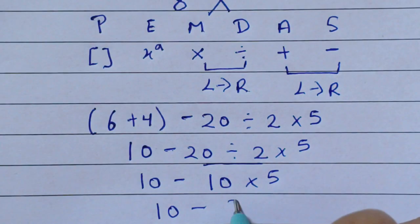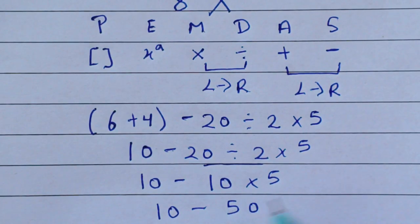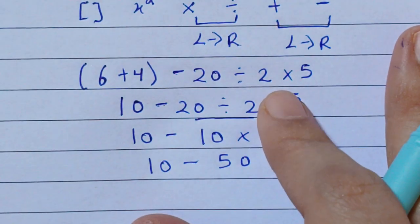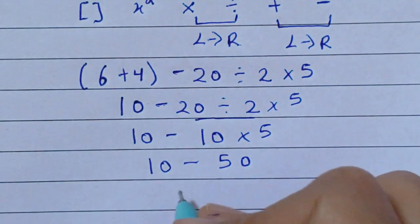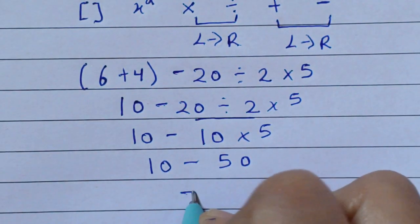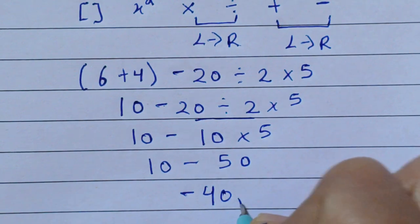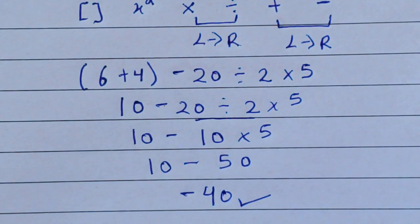Then 10 times 5 is 50, so we have 10 minus 50, which gives us minus 40. Our final correct value is minus 40. This is the correct value for the expression.